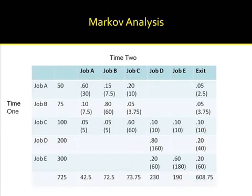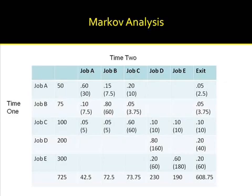The next matrix shows the results when we add each column. At time 1, we had a total of 725 people in the 5 job states. At time 2, we forecast that 42.5 people will be in job A — this is less than we had at time 1. Adding each column gives us the number of people in that job category at time 2. At the far lower right, we see the grand total of employees at time 2. If you selected job D as the one category with more incumbents at time 2 than at time 1, you are correct.